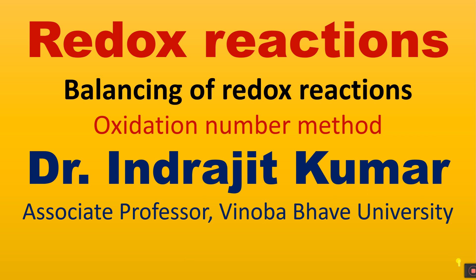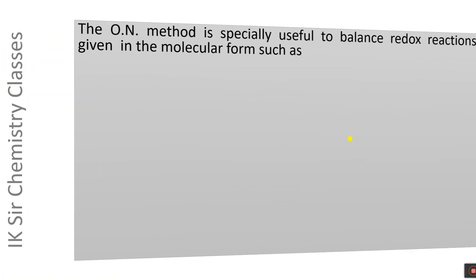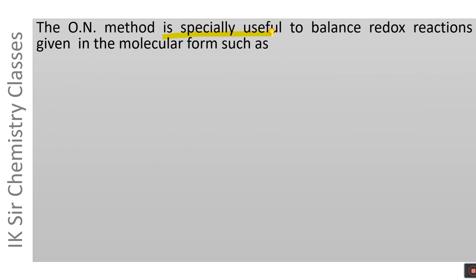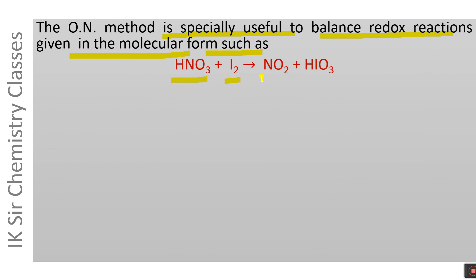Hello, my dear students, welcome to IKCIR chemistry classes. Here we are in lecture number 10 on redox reactions. In this video, we will discuss the balancing of redox reactions by oxidation number method. The oxidation number method is especially useful to balance redox reactions given in molecular form, such as HNO3 reacting with I2 producing NO2 and HIO3 (iodic acid). For such molecular-form redox reactions, the oxidation number method is more useful than the ion-electron method.